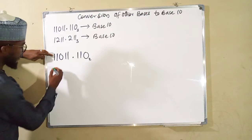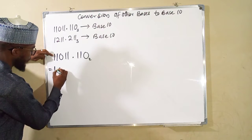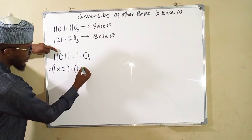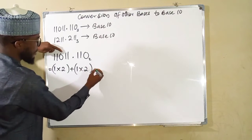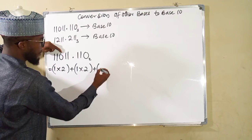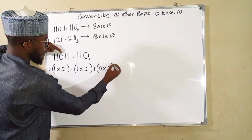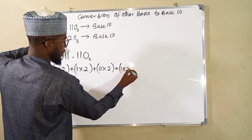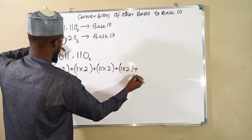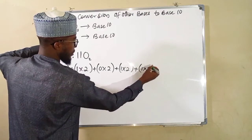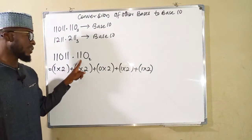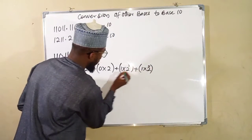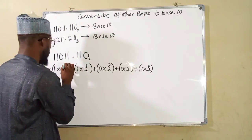We start with the first digit which is 1. We times it by the base 2. We add the second one: 1 times 2. We add 0 times 2. We add 1 times 2 again. We add 1 times 2. The other numbers are after the decimal point, so let us assign our index first. This is 0, 1, 2, 3, and 4.